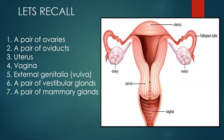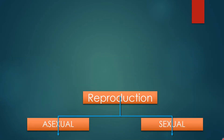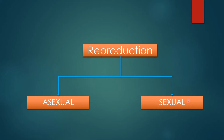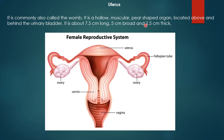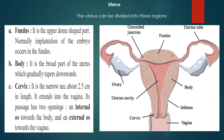The uterus is the central part and it consists of three parts: the dome-shaped fundus, the body, and the cervix. The cervix has two orifices — internal os and external os — and is connected to the vagina. The uterus, also called the womb, is a hollow, muscular, pear-shaped organ located above and behind the urinary bladder. It is about 7.5 cm long, 5 cm broad, and 2.5 cm thick.